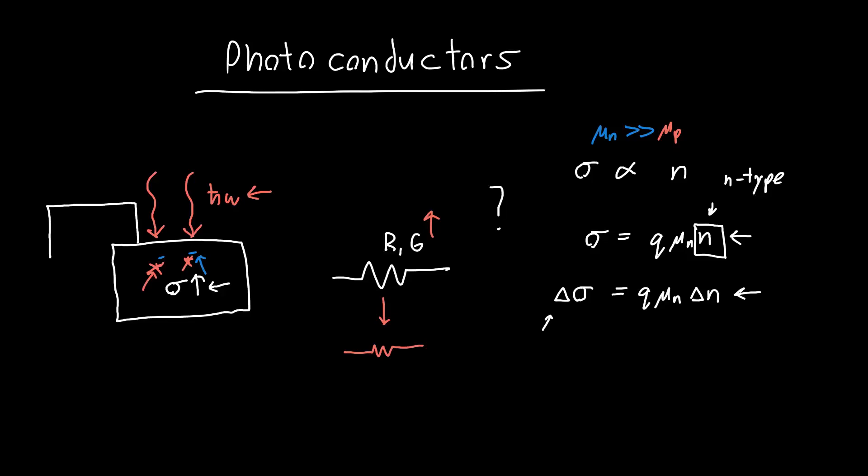But how do we actually go about measuring this photoconductor? We can't measure conductivity directly. We need to measure the current that results from applying a given voltage across this conductor.